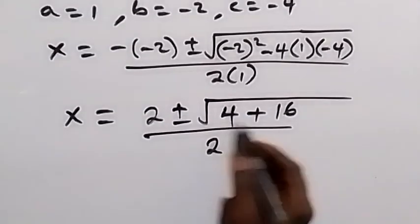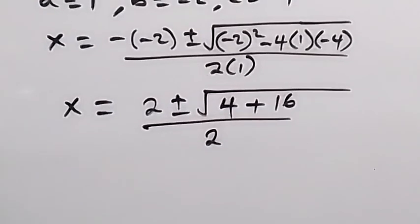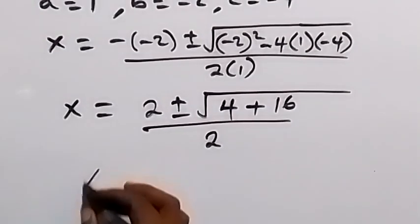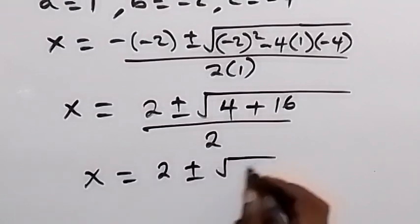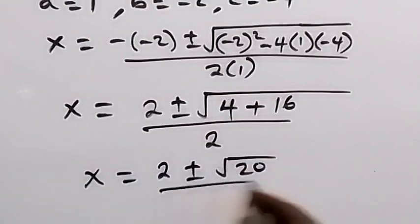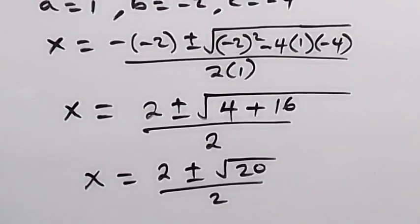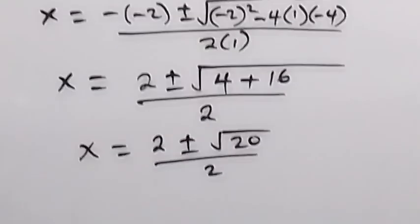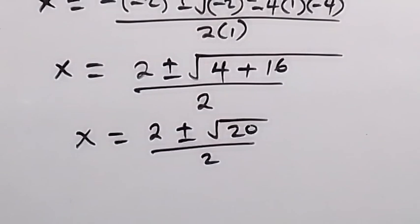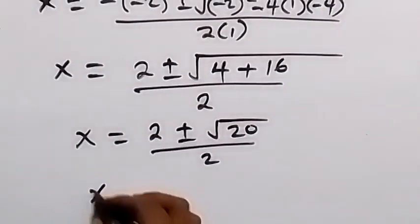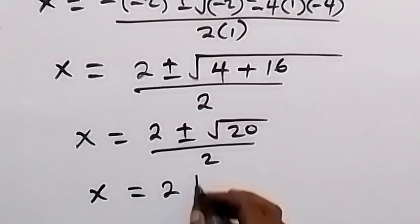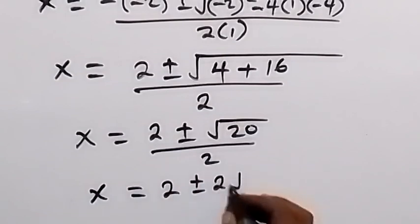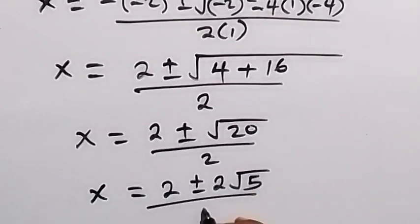Then from here, we have 4 plus 16, that's 20. So x equals to 2 plus or minus square root of 20 divided by 2. And square root of 20, we can separate that as square root of 4 times 5. And square root of 4 is 2.